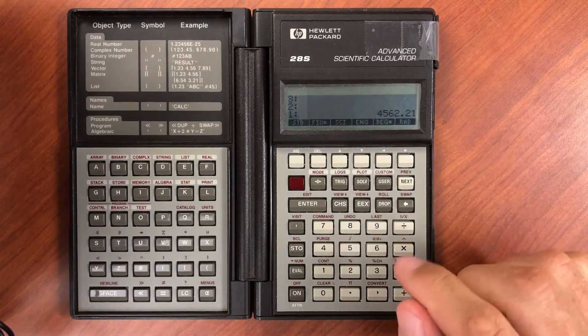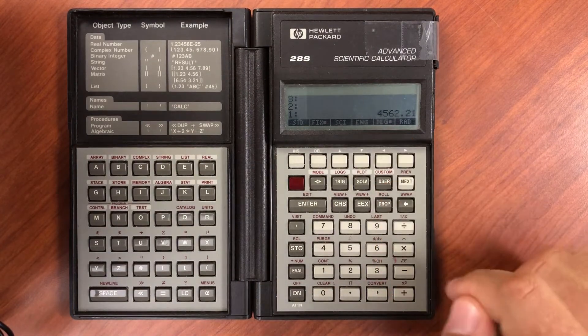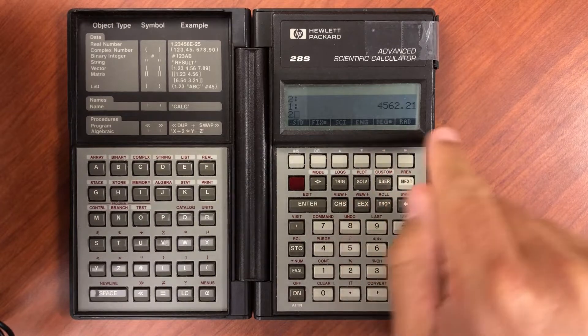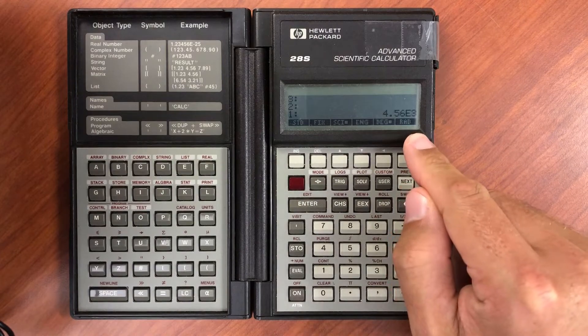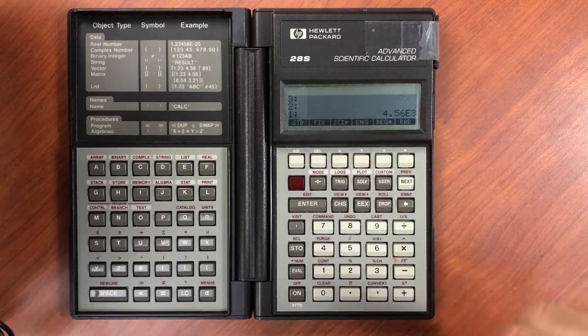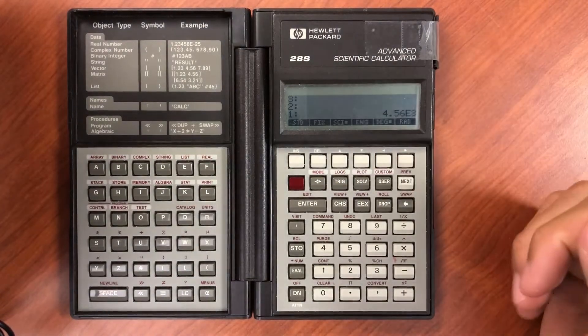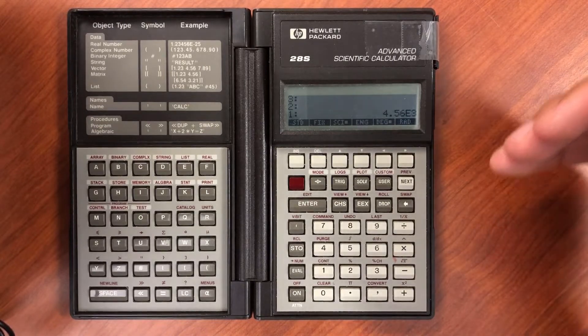Scientific mode will add an exponent. Let's have two decimal places, but in scientific mode we have 4.56 times 10 to the third. And then engineering mode does that in multiples of three for milli, mega, or kilo.